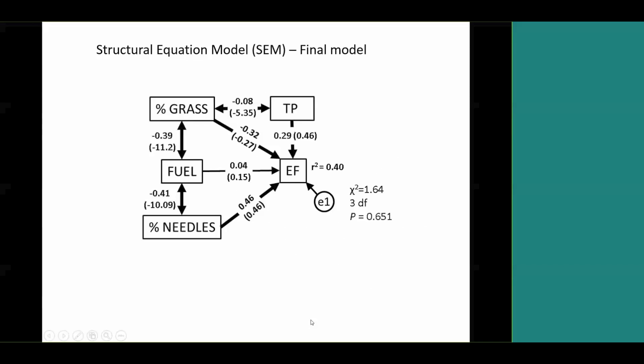Some variables that did make a difference: temperature — also correlated with later time in the season and growing season — and higher relative humidities had a positive effect on emission factors. Percent grass had a negative effect as predicted, and percent needles had a positive effect as expected. Fuel load didn't have a direct effect on emission factor but had relationships with other variables, creating an indirect effect. If you remove the non-significant effects and leave only the important direct and indirect ones, you get a simpler model focused on those variables.